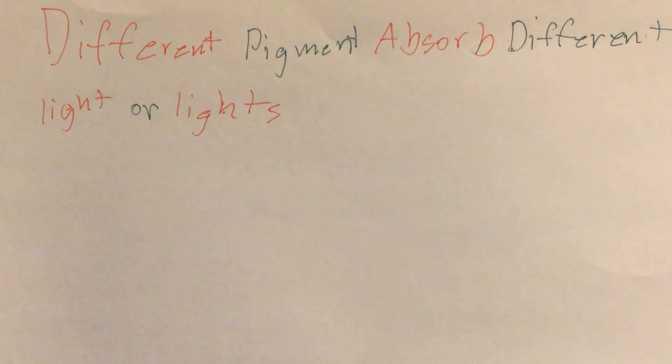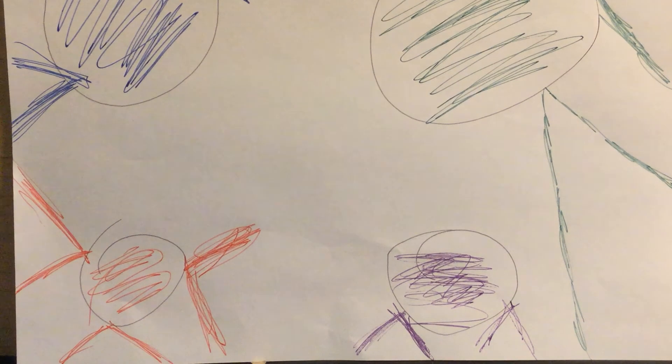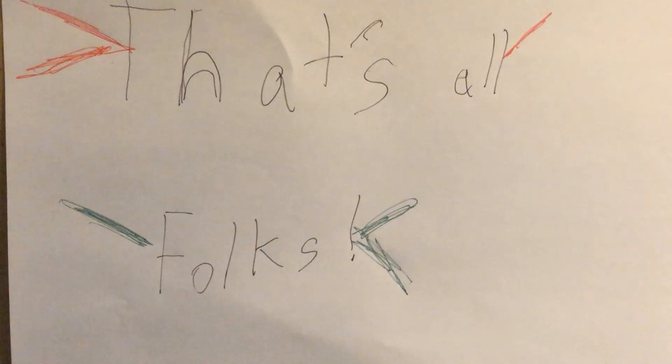Different pigments absorb different light colors. They can be yellow, blue, green, purple, and red leaves.